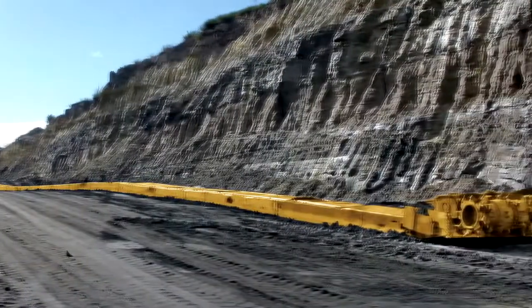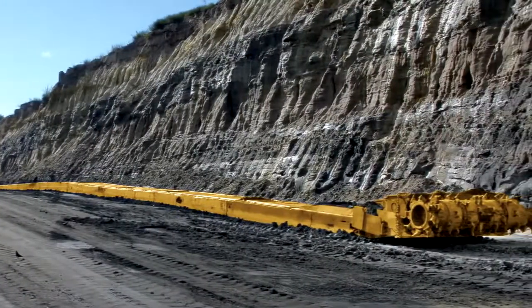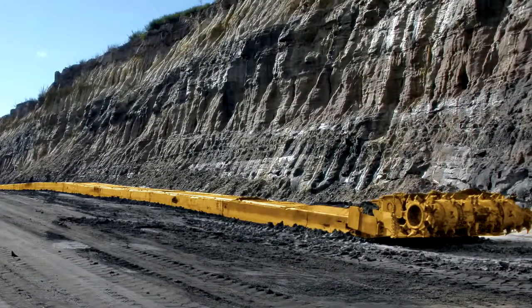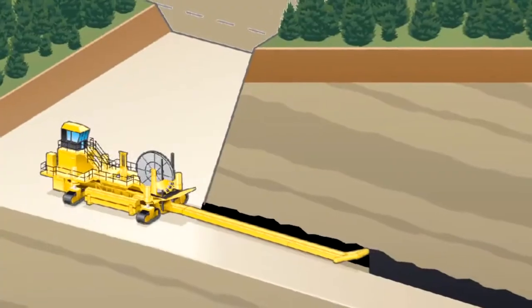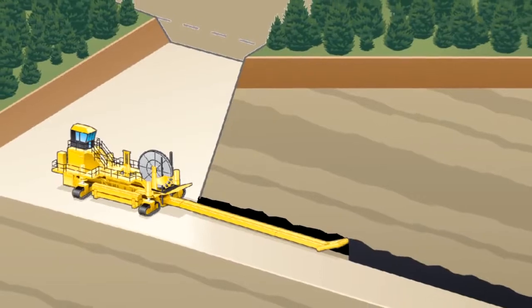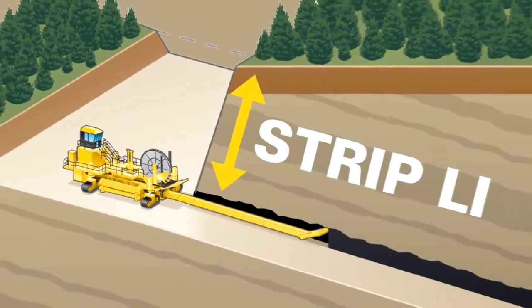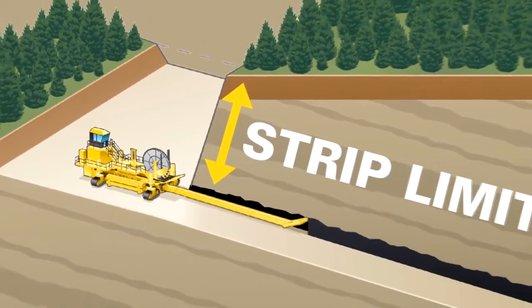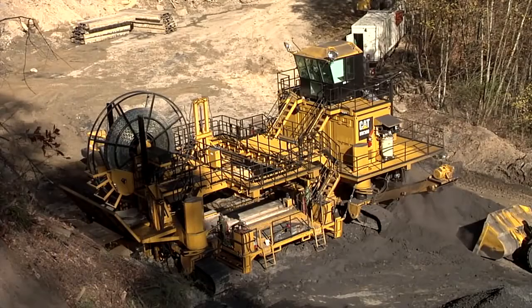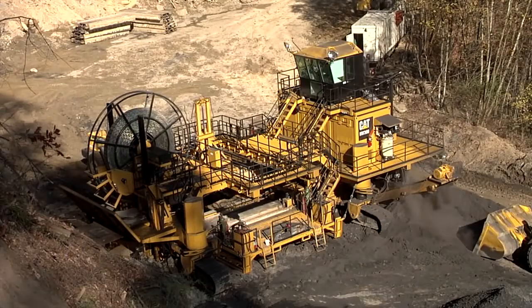The cycle also involves raising and lowering the cutter boom to cut the entire height of the coal seam.